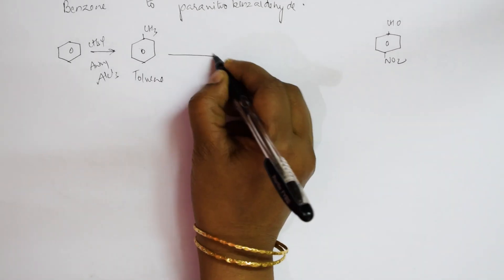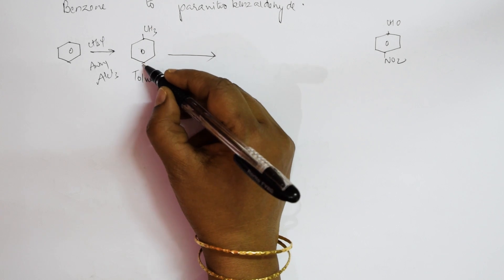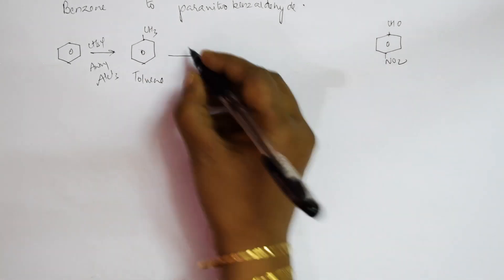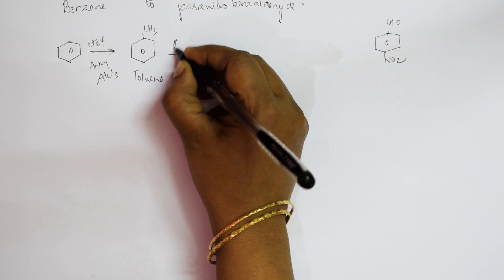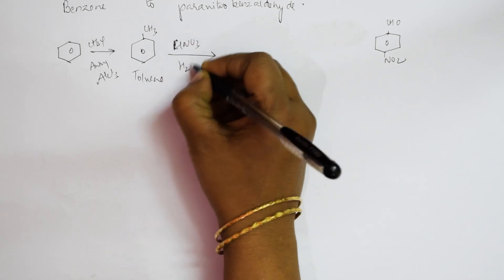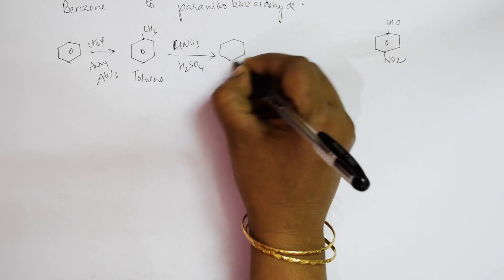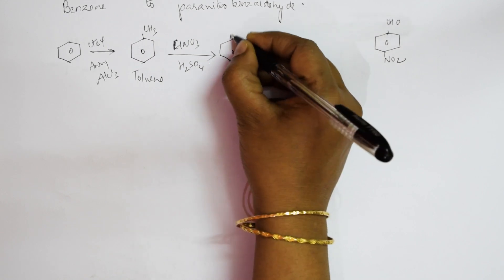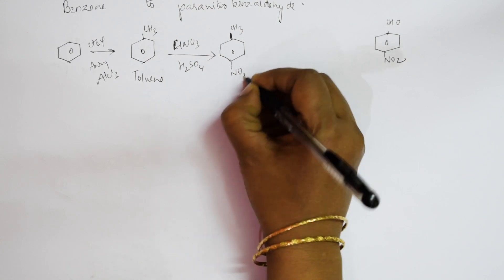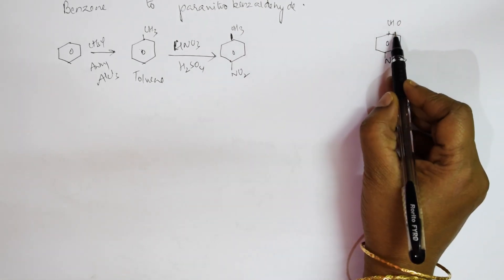From toluene, do nitration using HNO3 and H2SO4. This gives a benzene ring with CH3 and NO2 (nitrotoluene). Now I need to convert the CH3 group to a CHO group.